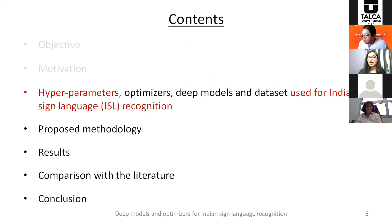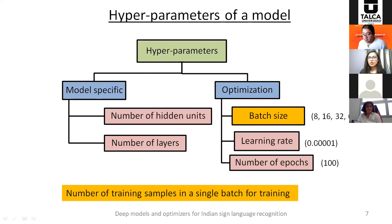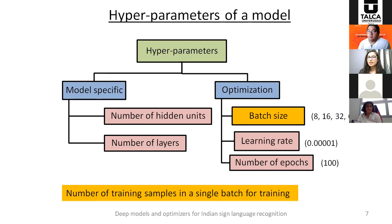Moving on to hyperparameters: these are basically of two types — model-specific and optimization-related. The whole training process of machine learning and deep learning models depends on these hyperparameters. Model-specific hyperparameters deal with the architecture, like the number of hidden layers. Optimization hyperparameters include batch size, learning rate, and number of epochs.